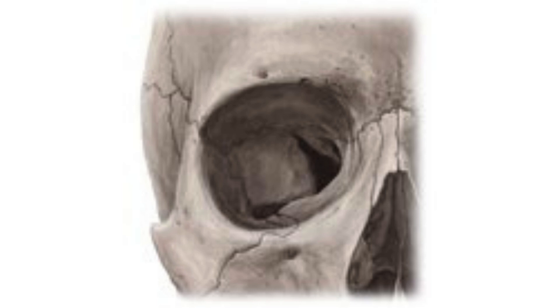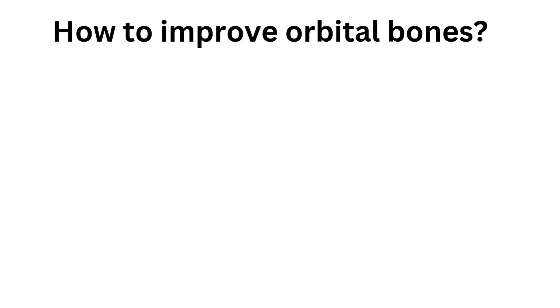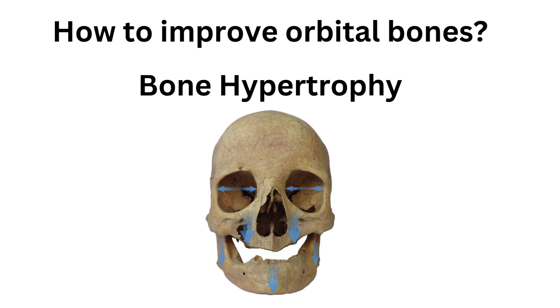Sometimes the eye area could be bad, but not in all cases. It's your orbital bones that mostly cause droopy eyelids — if they're weak and downturned, they cause droopy eyelids, but if they're in good shape and upwards, then it's basically a good eye area. Let's find out how to improve your orbital bones.